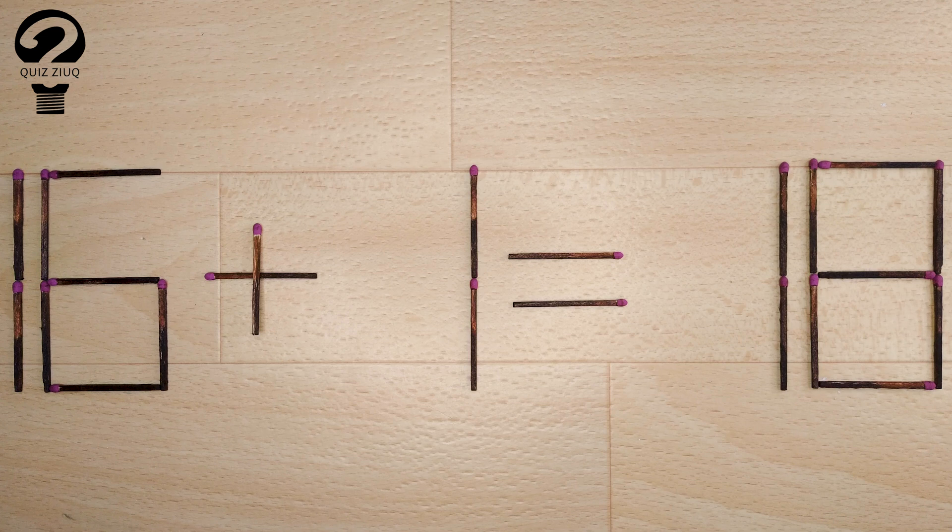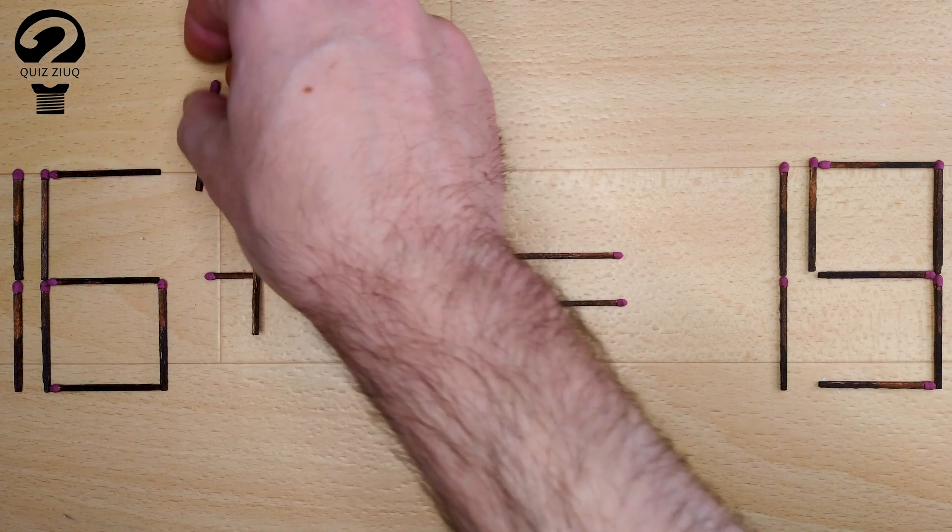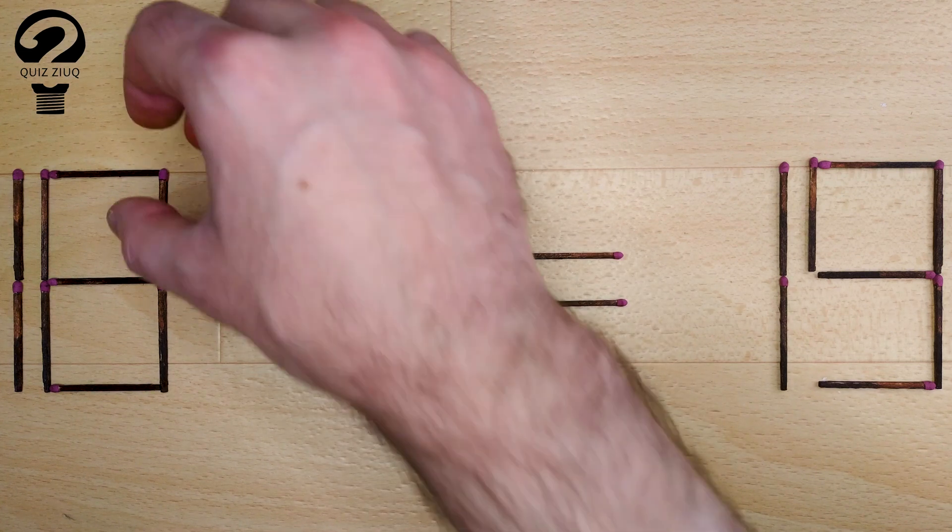How is this little puzzle solved? All we need to do is move one matchstick. And now when we check, 18 plus 1 equals 19. 19 equals 19. Our equation is correct.